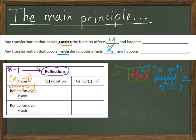In function notation, a reflection over the x-axis has to occur outside the function because it's changing y. So here's our function f of x. If we're going to multiply y by negative 1, I'm going to put the negative outside — that's essentially saying negative y, just like we've been doing before, because f of x is y.